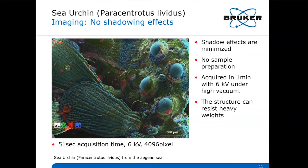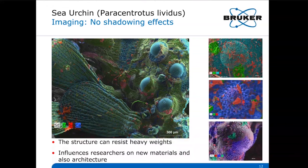Sea urchins are widely used as model organisms for evolutionary studies in terms of genetic and morphometric analysis. Furthermore, the spatial architecture of the sea urchin is a lightweight and heavy load-bearing system, so the skeleton and sponge-like shell structure visible in the maps on the right side influences researchers on new materials and architecture. The trabecular orientations reflect a construction which can resist heavy weights and distribute this pressure over the entire skeleton.